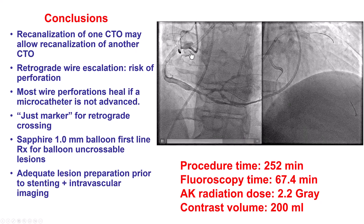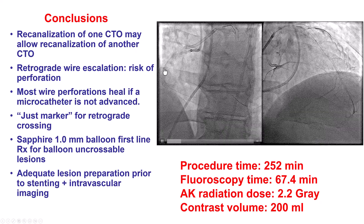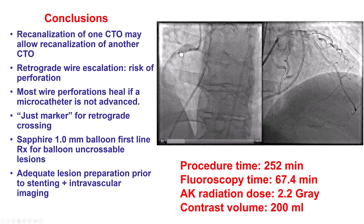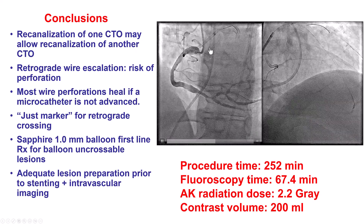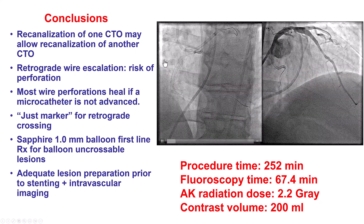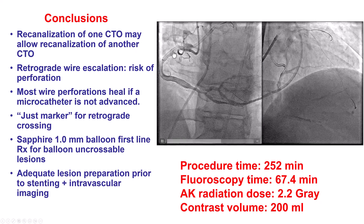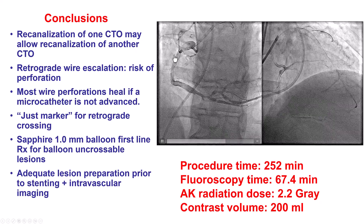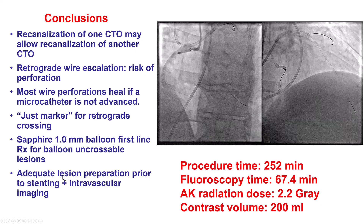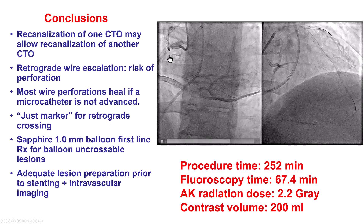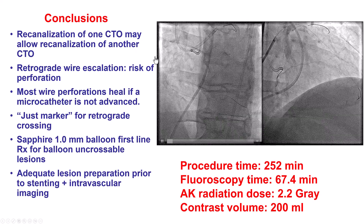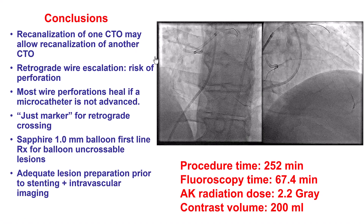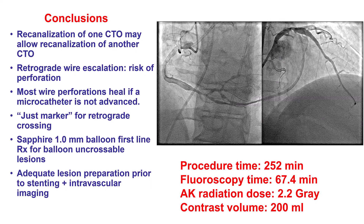The technique we used for crossing was the marker technique: the retrograde wire in the marginal branch served as a marker for where to advance our antegrade guide wire. We had a balloon-uncrossable lesion, and the combination of a Guideliner and a 1.0 mm balloon was successful. Finally, you want to pre-dilate with a balloon sized one-to-one to the target vessel prior to placing a stent to ensure there is no undilatable lesion that might need additional preparation, for example with atherectomy.